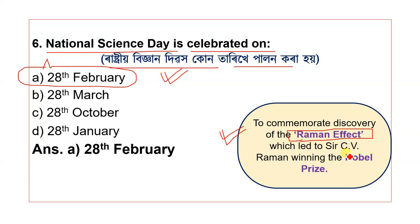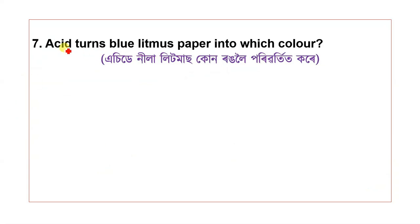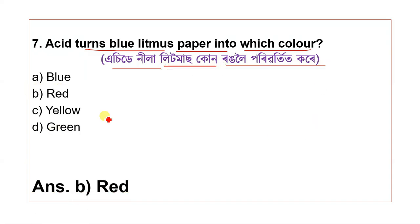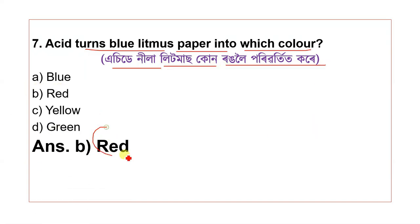Question 7: Acid turns blue litmus paper into which color? The options are blue, red, yellow, and green. The correct answer is red.